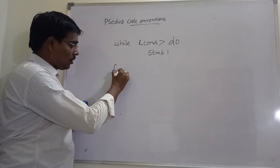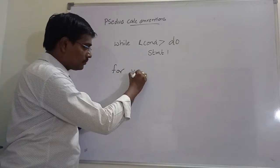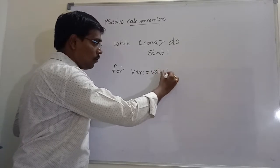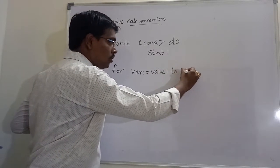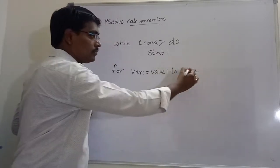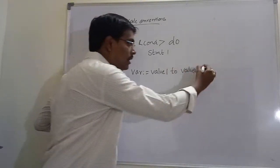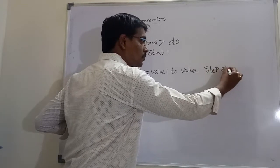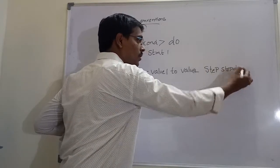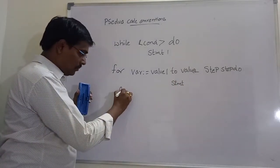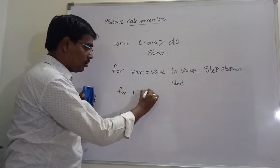Suppose coming to for. For some variable is equal to value to... variable is equal to value to step, step to... For example, for i equals 1 to n.